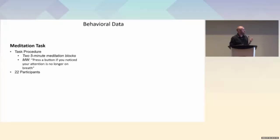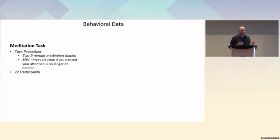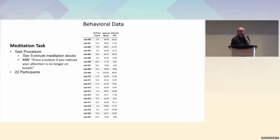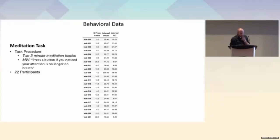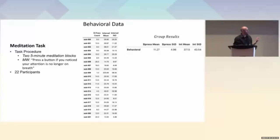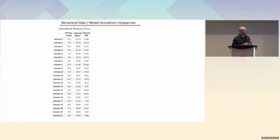The dataset is part of a larger fMRI study consisting of 22 participants who underwent a focused attention meditation task. There were two five-minute meditation blocks where they were told to press a button whenever they noticed their attention was no longer on the breath. This resulted in a count of button presses averaged over two runs, along with the extracted average interval between button presses and its standard deviation — resulting in on average 11 button presses over five minutes, with an interval of around 37 seconds between presses.